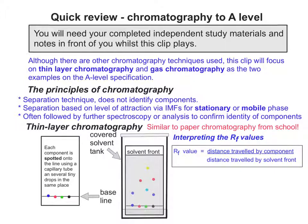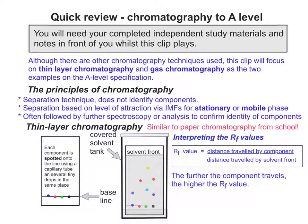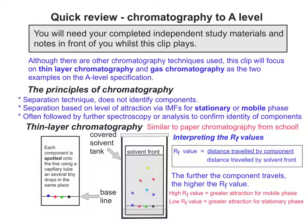The RF value represents the distance travelled by the component divided by the distance travelled by the solvent. Mathematically, the further the component travels, the bigger the number you get — so the higher the RF value. A higher RF value indicates a greater attraction for the mobile phase, therefore a low RF value indicates a greater attraction for the stationary phase. The stationary phase is the silica on the plate, and the mobile phase is the solvent.